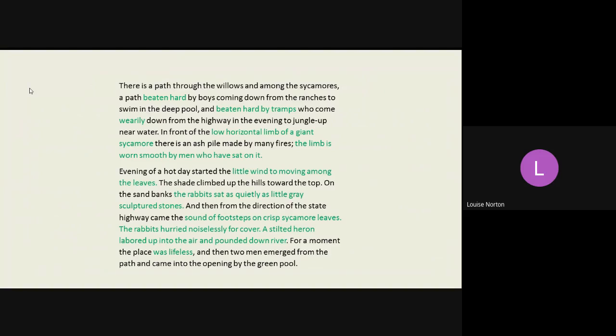So what techniques did you identify there? We can look at the verb use. We can look at the repetition of beaten. We can look at the personification, the low horizontal limb of the giant sycamore. We can have the onomatopoeia, how sound is used in the extract. The wind starts moving. The sound of footsteps, crisp sycamore leaves. We can write about the sense of tension. The rabbits hurried noiselessly. The heron flies away.